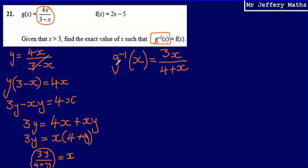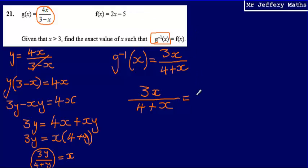That's the first part of the question. Now I need to find the exact value of x such that these two things are equal to each other. So I have the equation: 3x over (4 plus x) equals f(x), which is 2x minus 5. I'm essentially looking for the value of x that makes the inverse of g(x) equal to f(x).